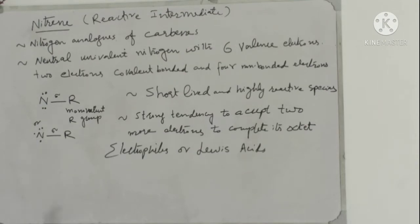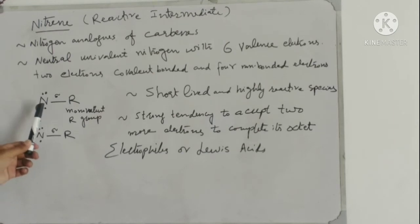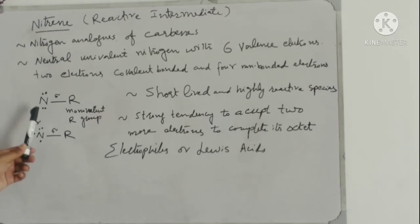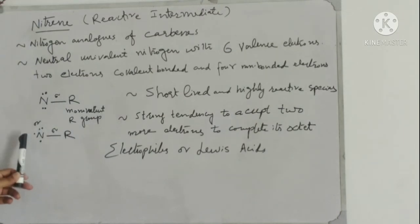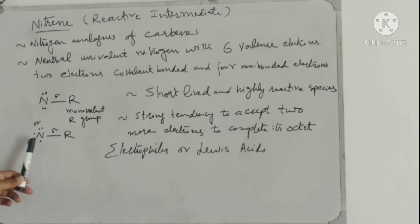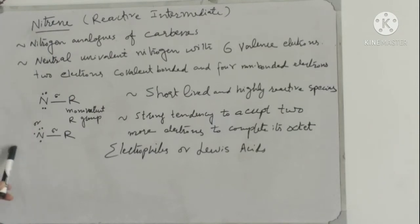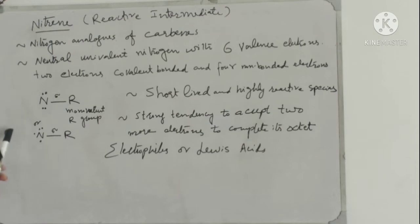Later on we will discuss about these two types of nitrenes in which these non-bonded electrons are present either as two lone pairs, or as one lone pair and two unpaired electrons on nitrogen. We will discuss about the two types of nitrenes.